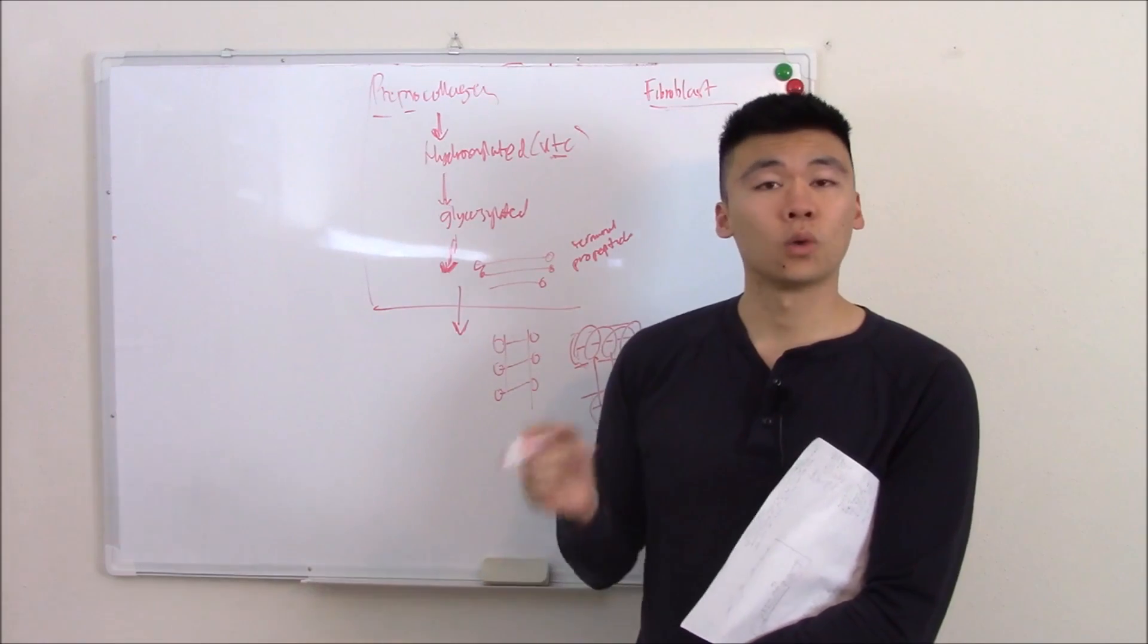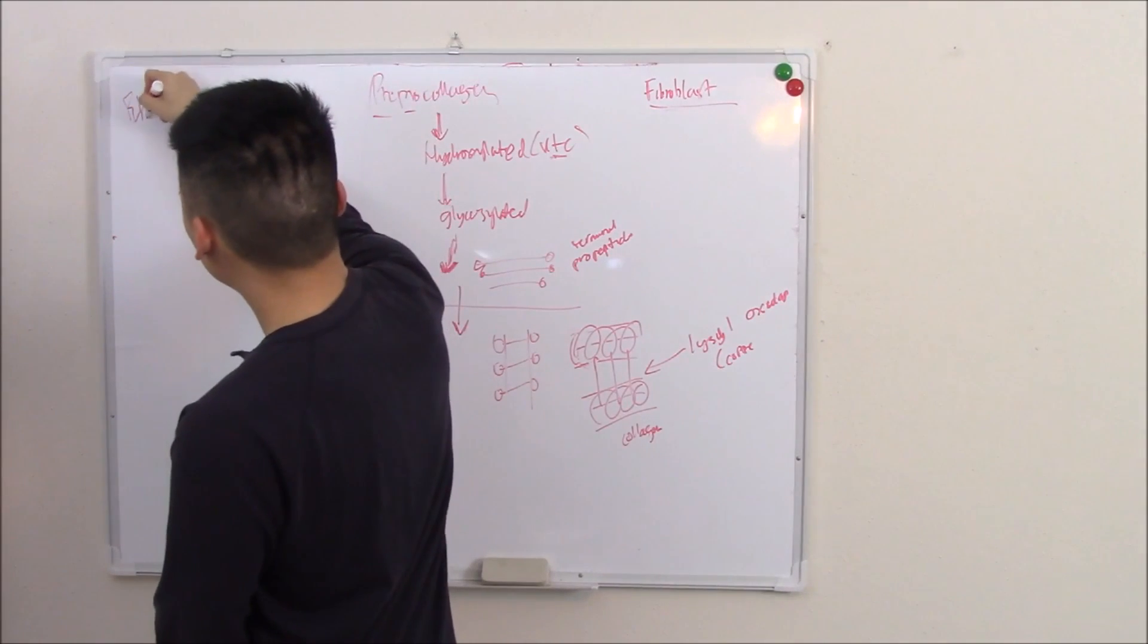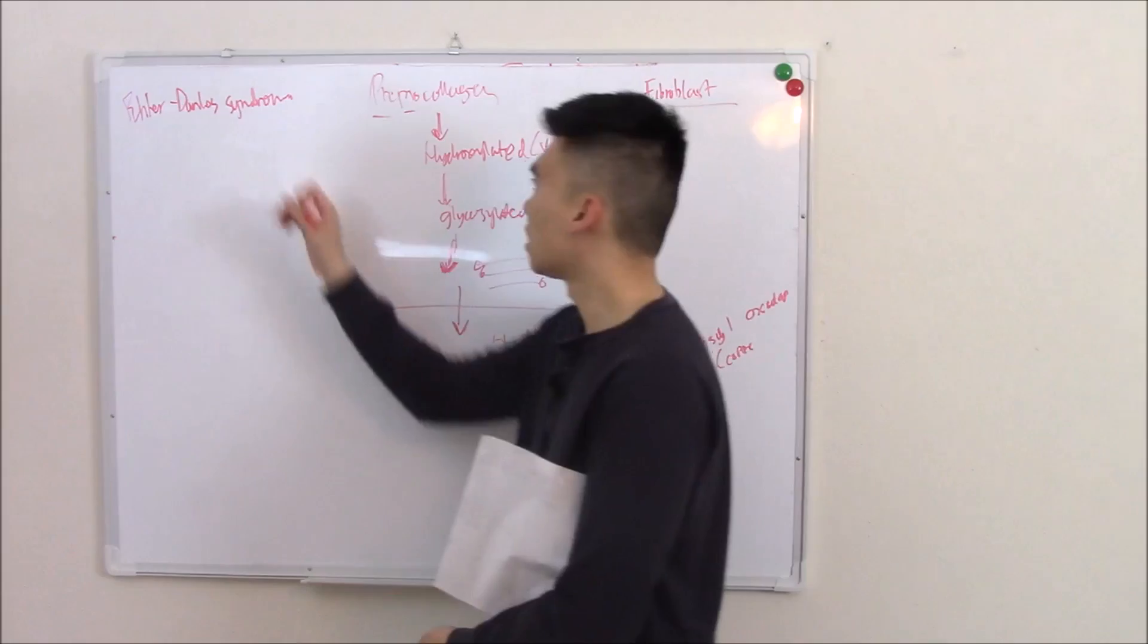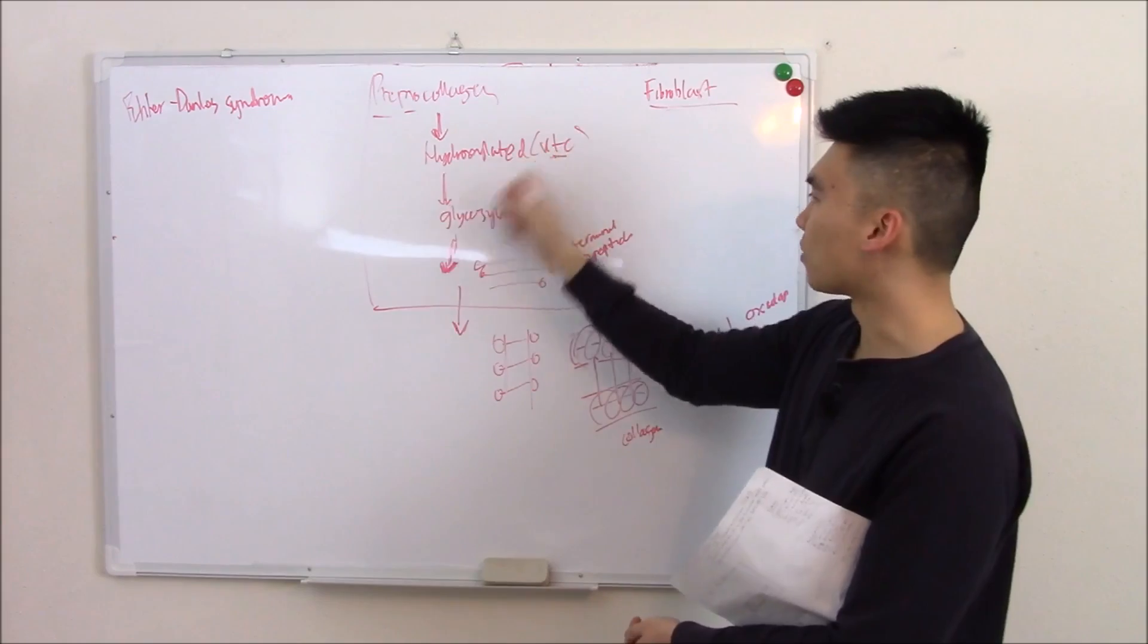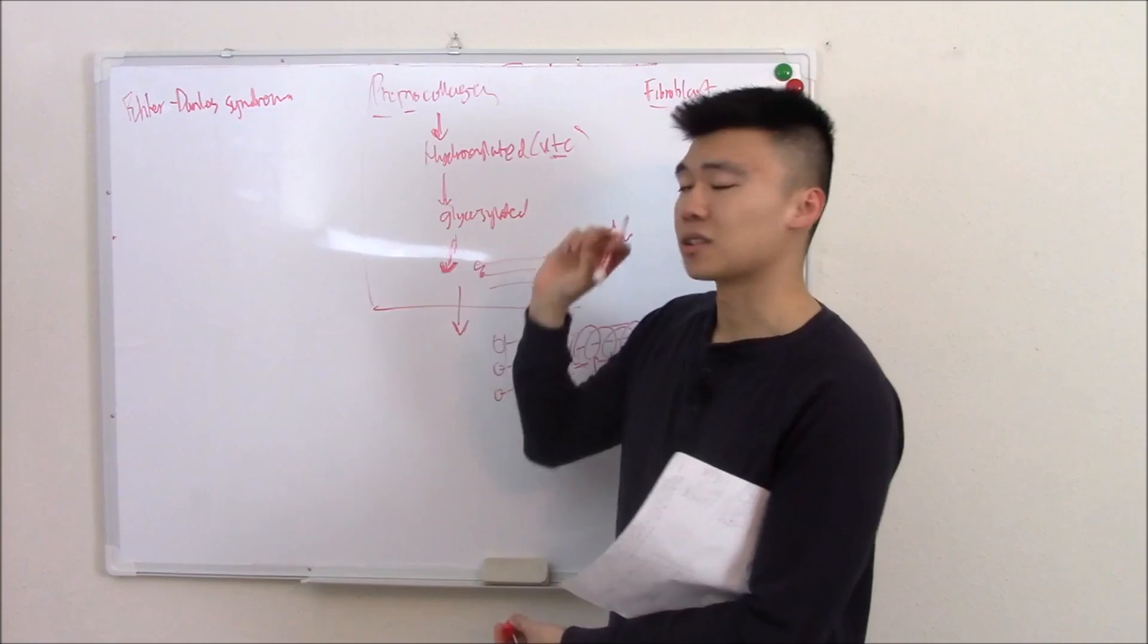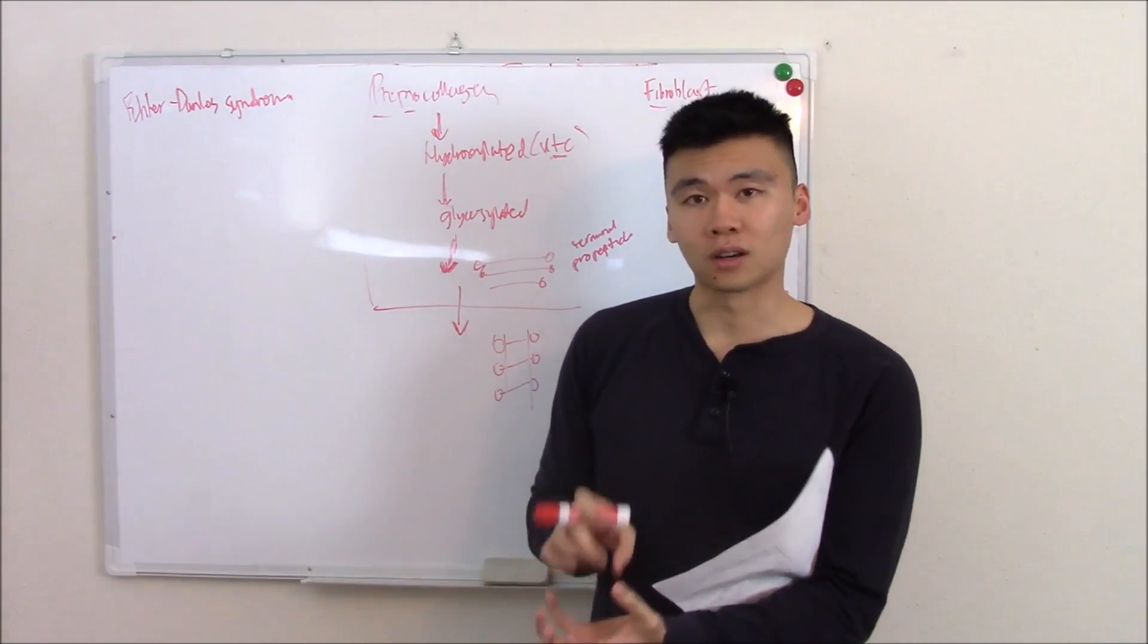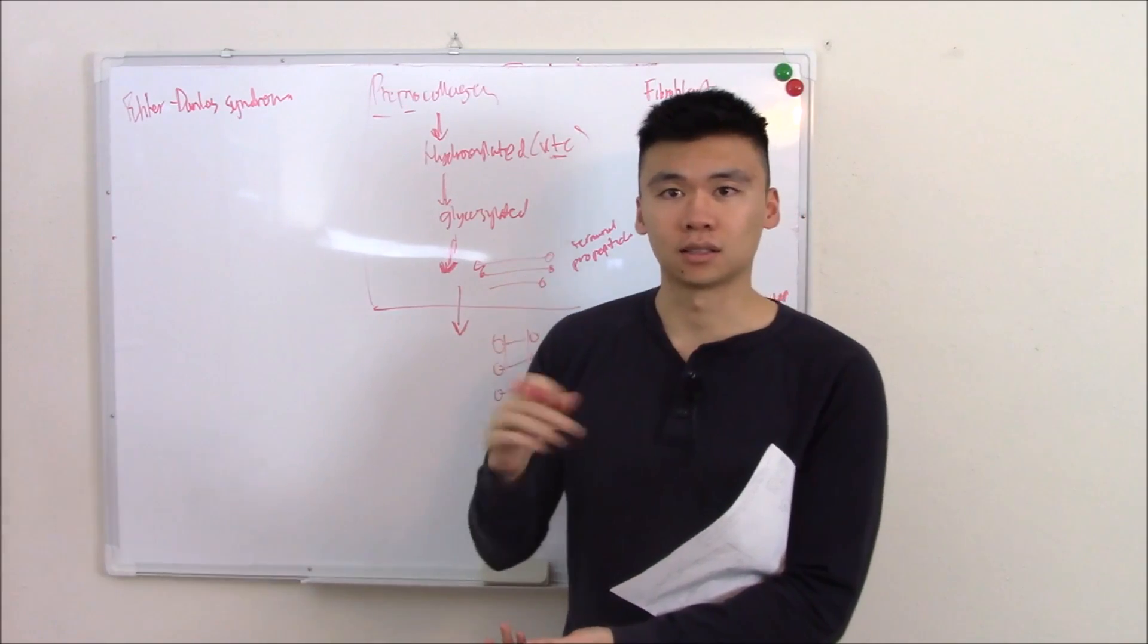So what can go wrong? Well, one disorder due to defective collagen synthesis is called Ehlers-Danlos Syndrome. There's actually a group of disorders. It can be affected by any enzyme, not particular to one enzyme or defect. But collagen is not made correctly, and so patients have really stretchy skin, really lax joints. Their blood vessels aren't as tight as they should be, so they can have aneurysms. That is Ehlers-Danlos Syndrome.